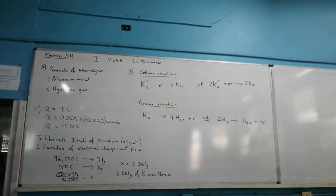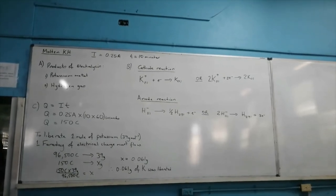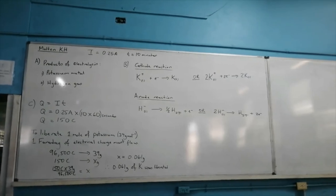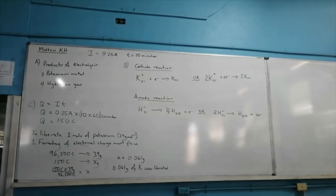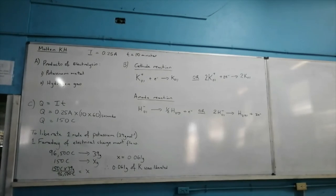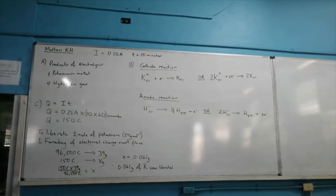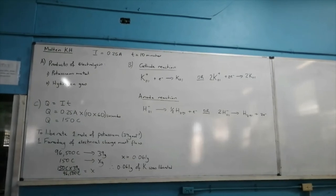To represent the reactions at the cathode and anode: the cathode reaction shows that 1 mole of potassium ions accepts 1 mole of electrons to form 1 mole of potassium metal. The anode reaction shows that 2 moles of hydride ions produce 1 mole of hydrogen gas and liberate 2 moles of electrons, since hydrogen does not exist as an atom.